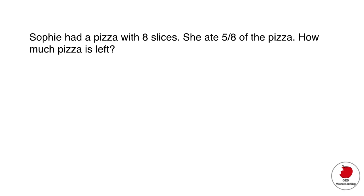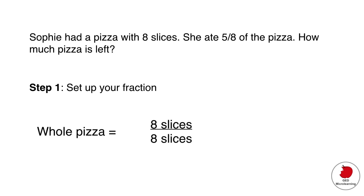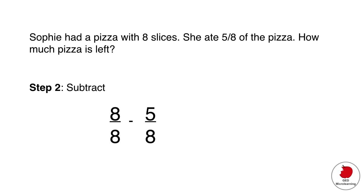Final problem: Sophie had a pizza with eight slices. She ate five-eighths of the pizza. How much pizza is left? Set up your fraction: one whole pizza is eight over eight. She ate five over eight. So the equation is eight over eight minus five over eight. They already have a common denominator, so just subtract the top numbers: 8 minus 5 equals 3. The answer is three-eighths of the pizza remaining.